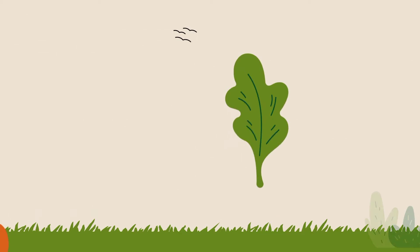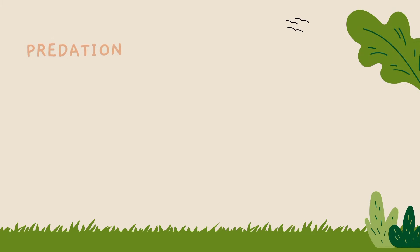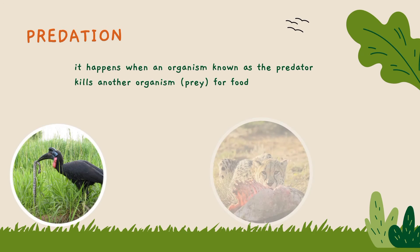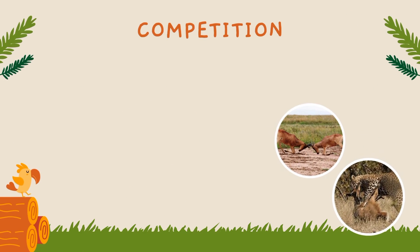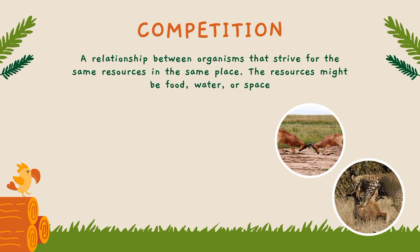Another example of non-symbiotic is predation. Predation is when one organism eats another organism for food. The organism that is eaten is called the prey. Another example of non-symbiotic is competition. It is the relationship between organisms that strive for the same resources in the same place. It happens when organisms compete for resources such as food, space, and territory.